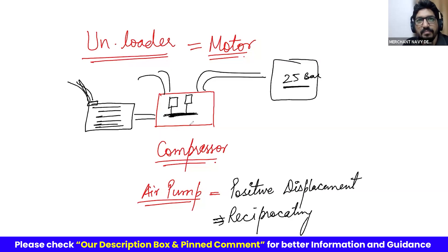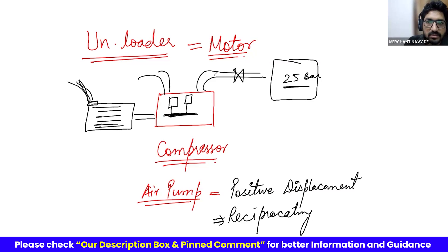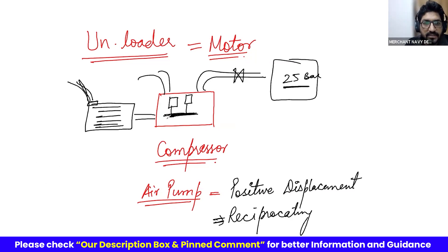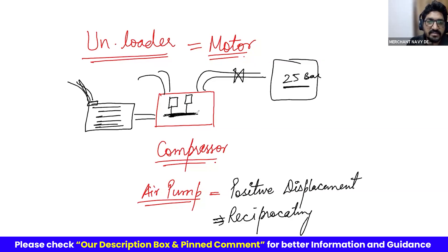This is not like a centrifugal pump. In a centrifugal pump, the pressure delivery depends on RPM, and it's not a positive displacement. In a centrifugal system, if the delivery valve is shut and pressure is really high, the load on the motor is actually less because flow is less. But in this case, if you close the delivery valve, pressure rises very fast — there will be sudden load on the motor.